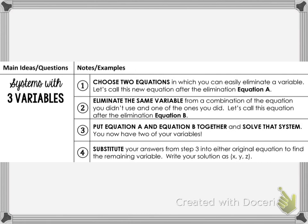We'll solve that system of equations in two variables just like we did a few weeks ago, and that'll give us two of our three variables. Step four: after we get those two variables, we substitute those two answers from step three into one of our original equations — it doesn't matter which one of the three — to find our remaining variable. We'll then write our solution as an ordered triple: x, y, z.